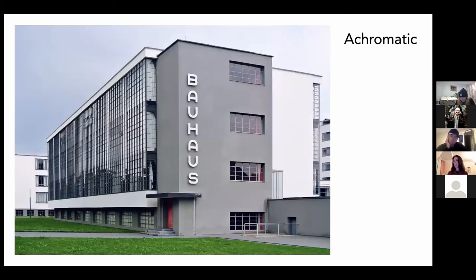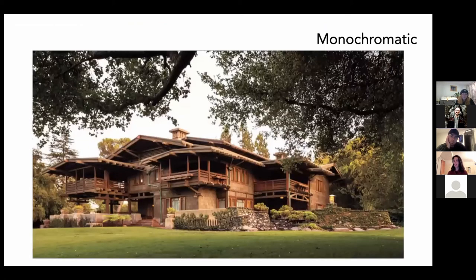Looking at some color schemes used through history: the Bauhaus is the perfect example of an achromatic color scheme — grays, blacks, whites, with some punches of red. It's bold, sophisticated, dignified, and intellectual. For a monochromatic scheme, the Gamble House by Greene and Greene is a perfect example — using lots of different woods, stone, and natural materials so that the building feels as if it's grown from the earth.